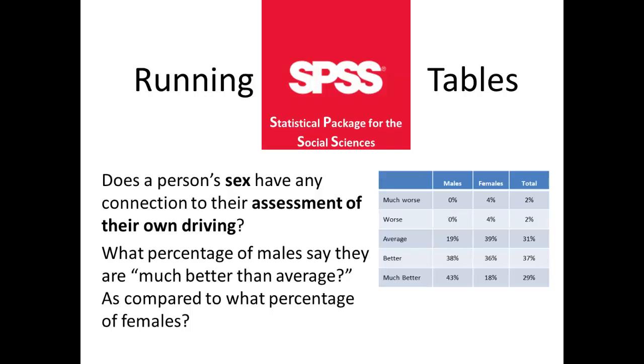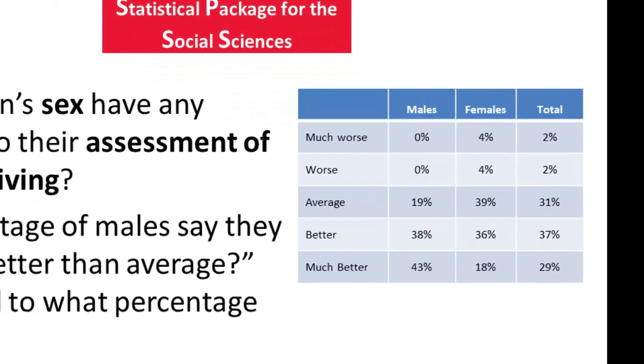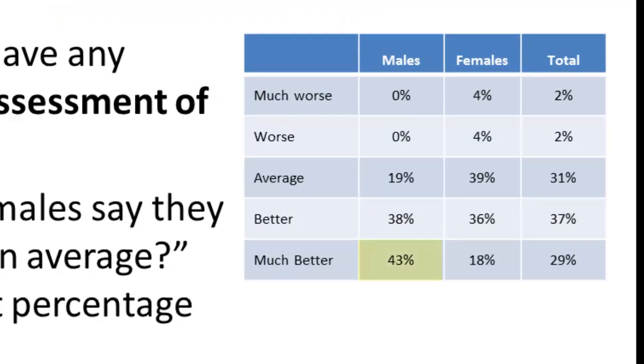When you ran cross-tabulation analyses, you were able to answer the first question. Our table shows that 43% of the males in our sample assess their driving skills as much better than average as compared to only 18% of women. But what about the mean? Since this is gathering interval or scale-level data, we can run means on these questions.